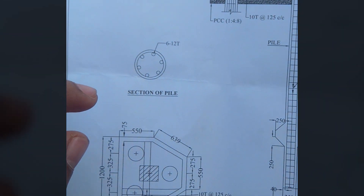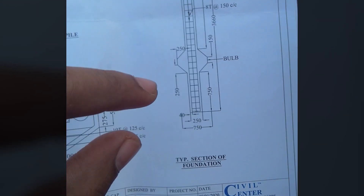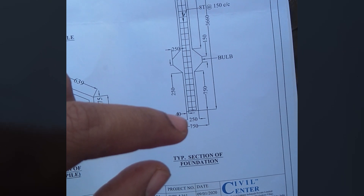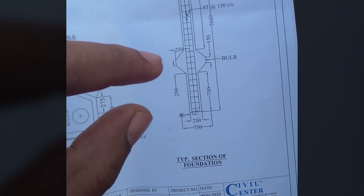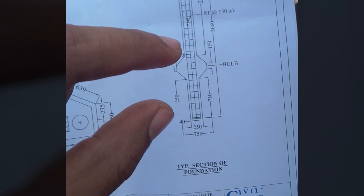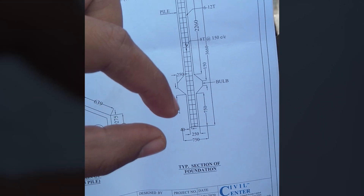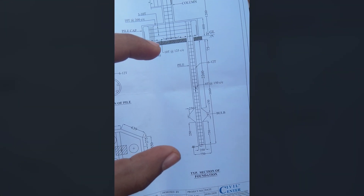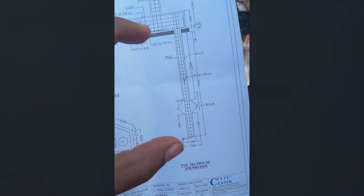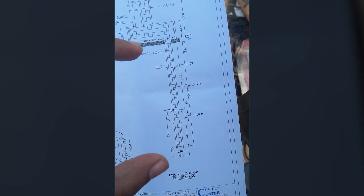The diameter of the pile used here is 250 mm. There is also a bulb at the bottom — this is an end-bearing pile. The depth of the pile is determined after analysis of the soil test report.